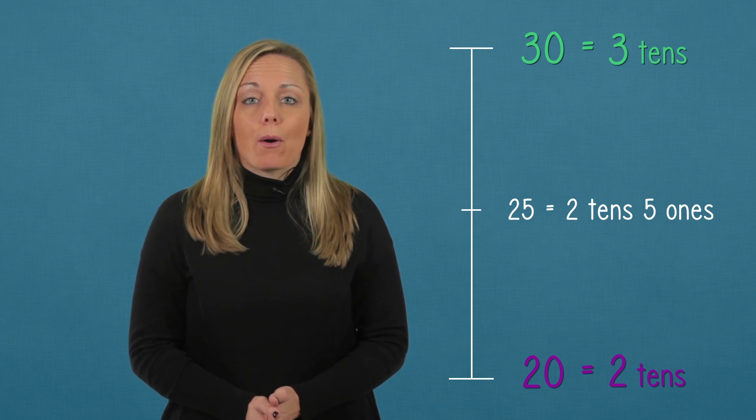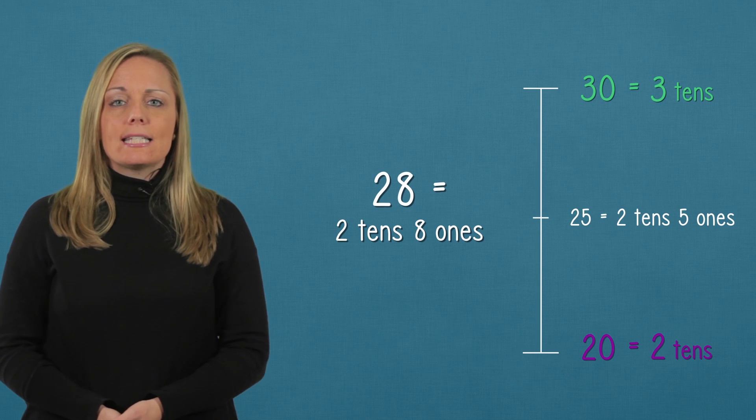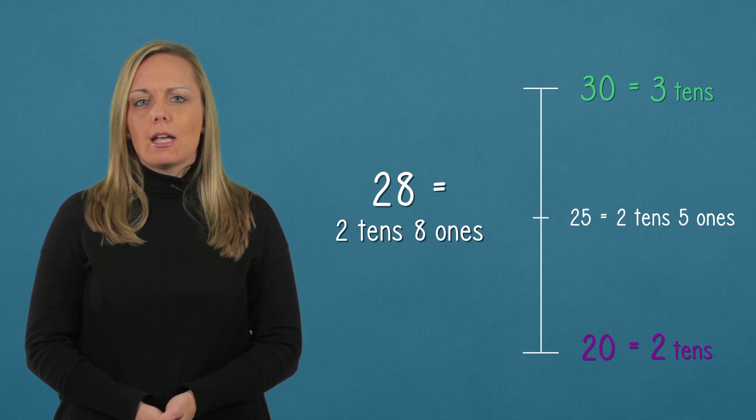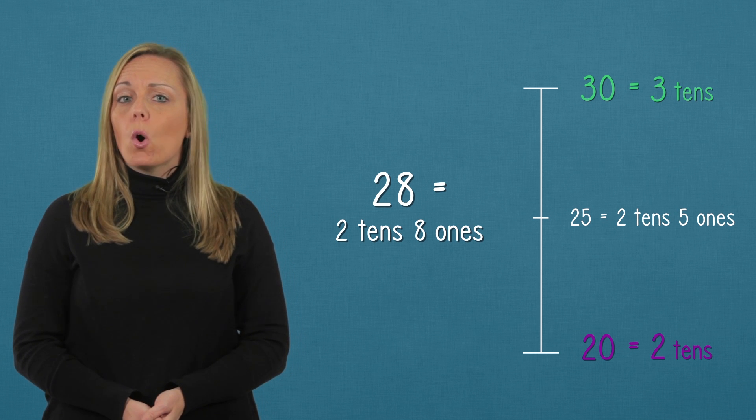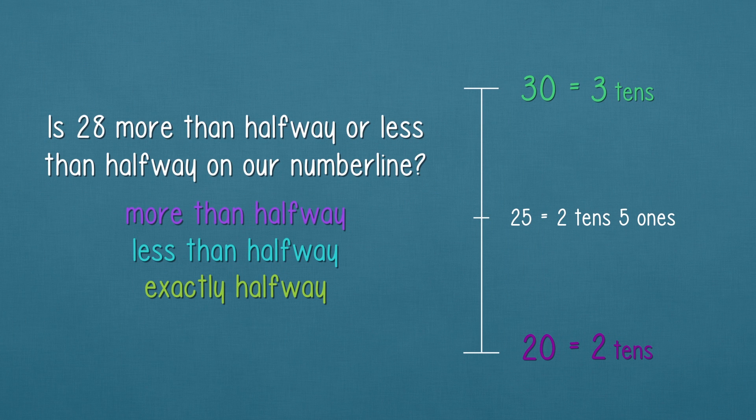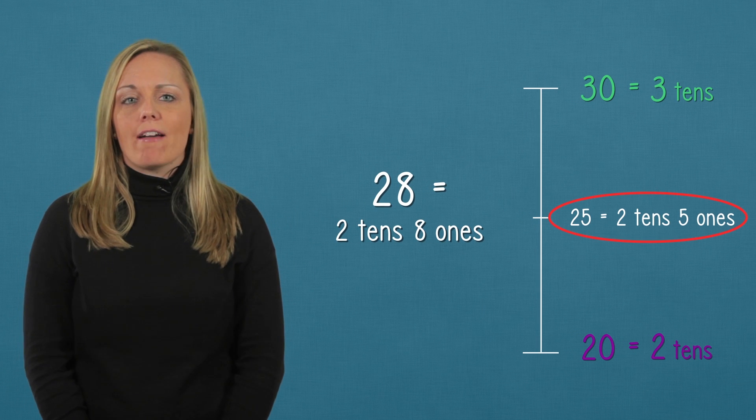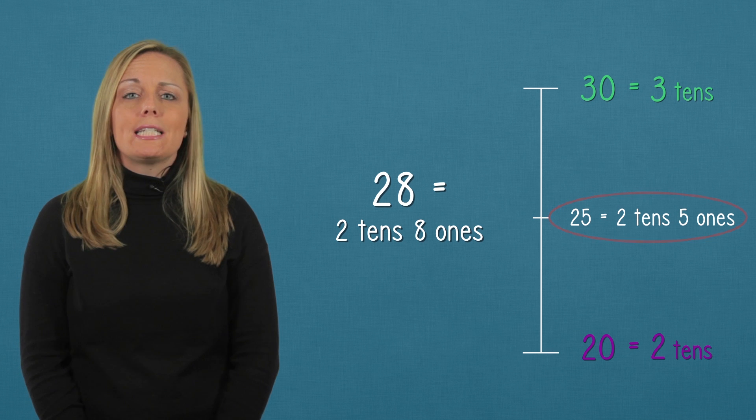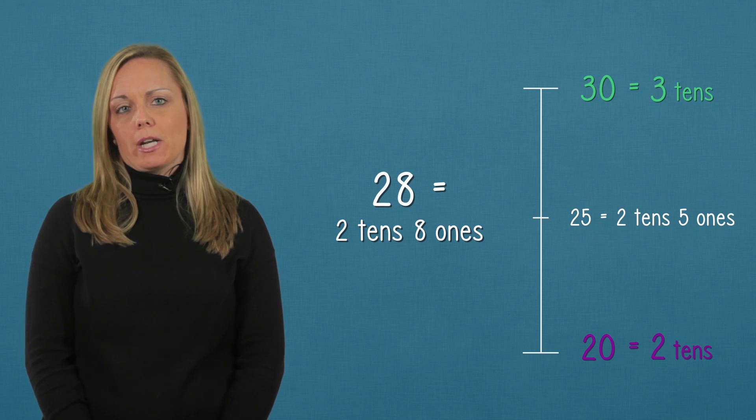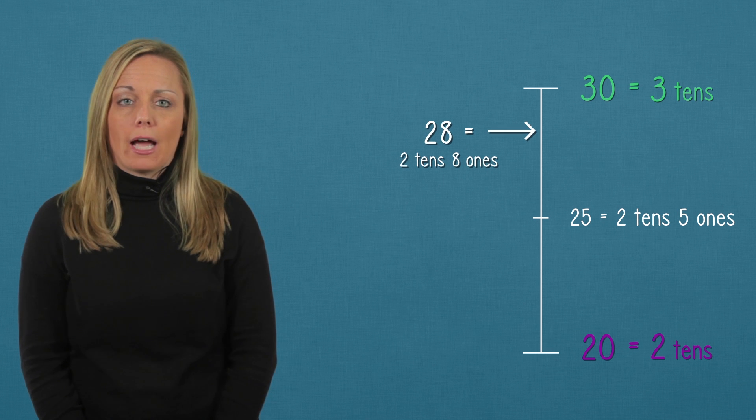Now we're ready to plot our point. So look at 28. That's two tens and eight ones. Is that going to be more than halfway or less than halfway on our number line? Our midpoint is here at 25, and we know 28 is more than 25. So 28 is more than halfway on our number line.